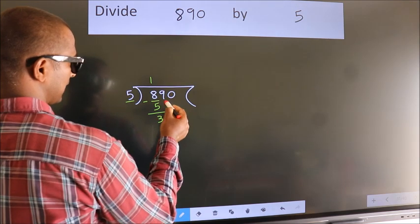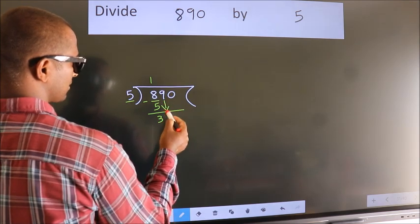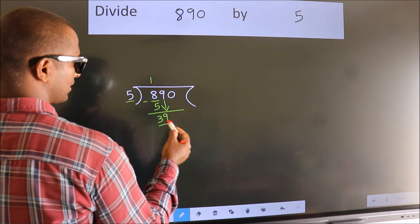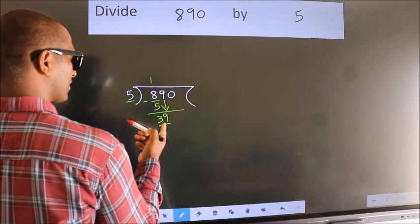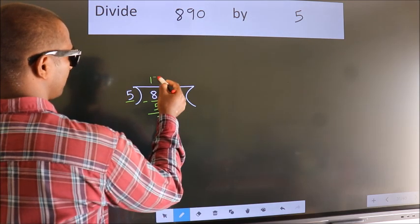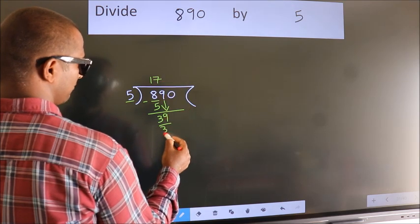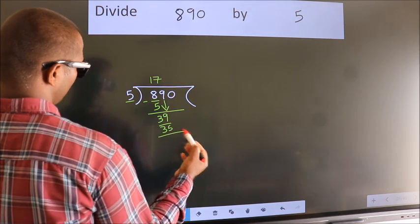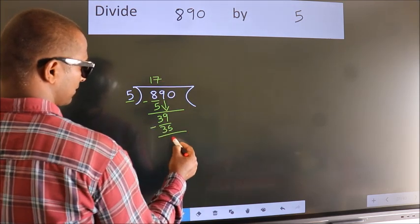After this, bring down the beside number. So 9 down. So 39. A number close to 39 in the 5 table is 5 sevens 35. Now we subtract. We get 4.